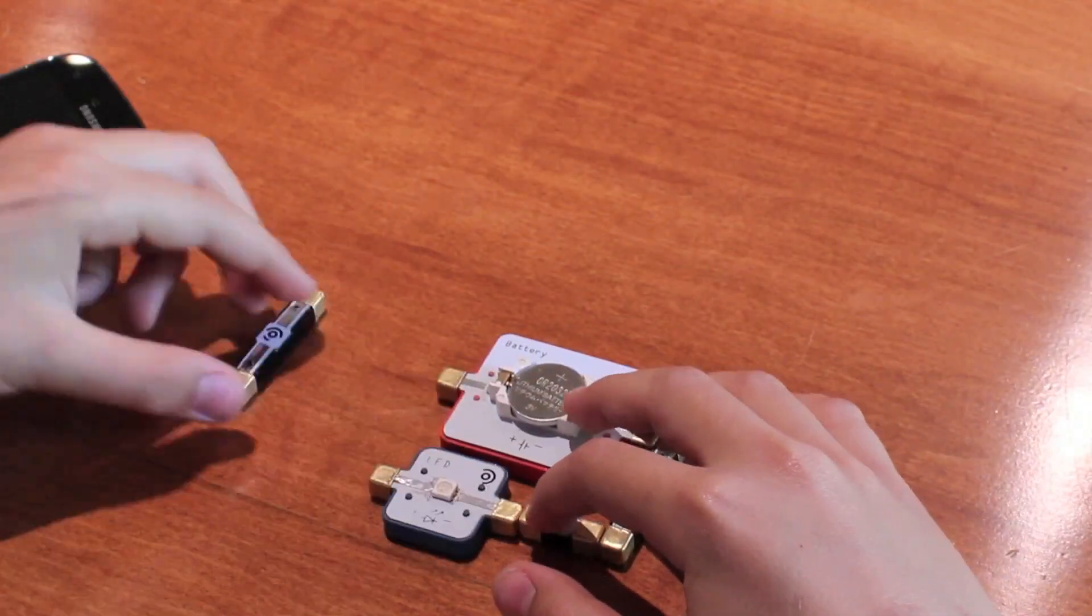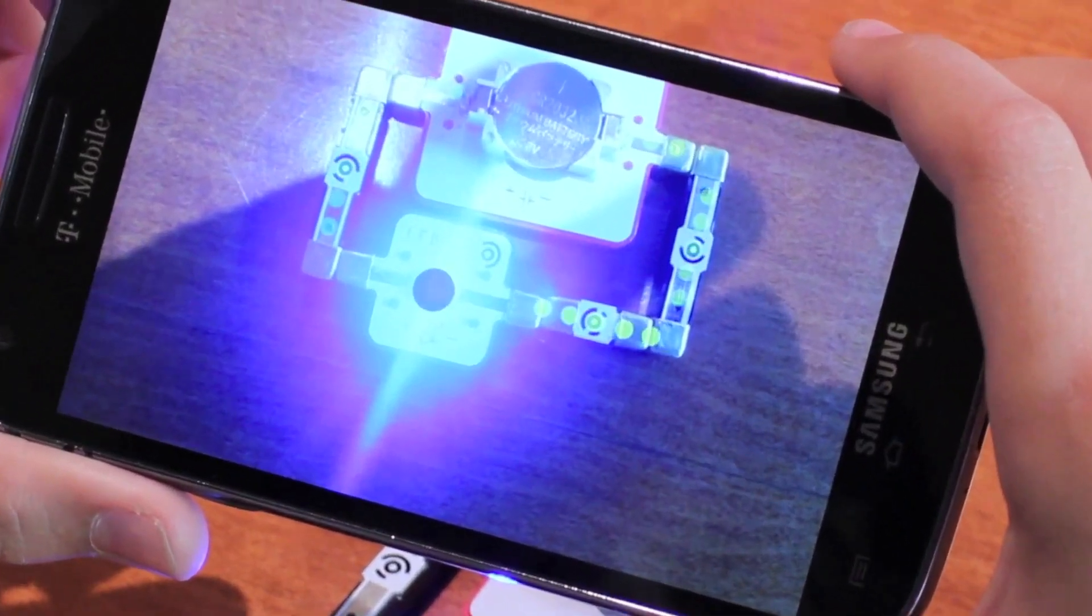And when it is working, kids can see how electricity is flowing in the circuit as an overlay.